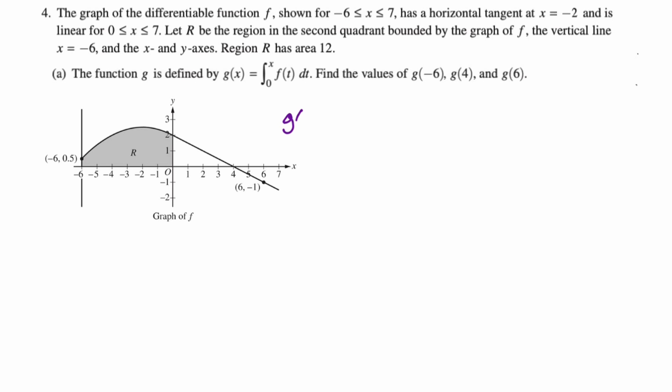So these are just definite integrals. So g of negative six is the integral from zero to negative six of f of t dt. But we're going to flip the bounds and change the sign. So that's the negative of the integral from negative six to zero of f of t dt. And we are told that the area of region r, which is the region from negative six to zero, is 12. So this will be negative 12.